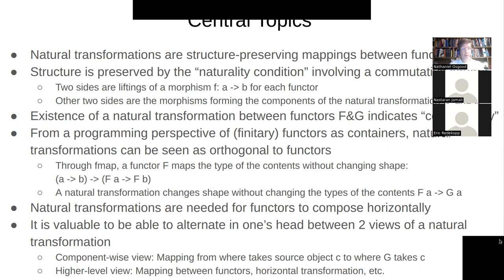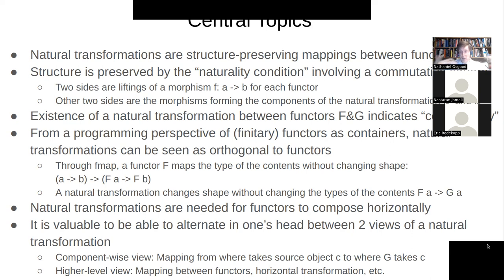Natural transformations are structure-preserving mappings between functors, which hopefully gives a feeling of comfort — it's turtles all the way down. It's the same notion of structure-preserving mappings that we saw within a category as morphisms. When we're reasoning about functors mapping one category to another as structure-preserving mappings, we see the same idea here.